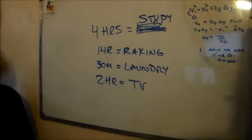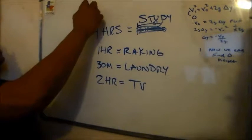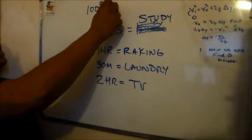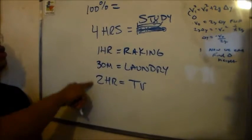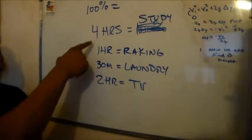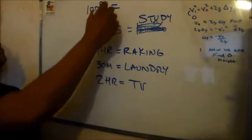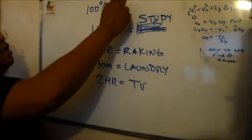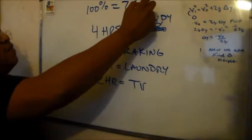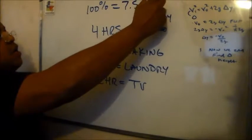Alright, so the complete time that we spent, 100% of that time is four plus two plus one, which is seven. Yeah, four, five, six, seven, seven and a half hours. Seven point five, or seven hours, thirty minutes.